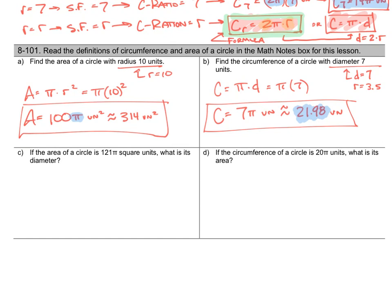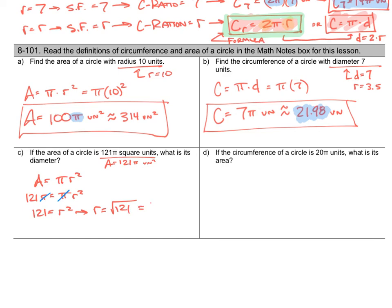Part C: the area of a circle is 121 pi square units — what is its diameter? Going back to the formula: area equals pi times radius squared. Substituting in, 121 pi equals pi times r squared. Dividing both sides by pi, those cancel, leaving 121 equals r squared. That means r is the square root of 121, which is 11. The diameter equals two times the radius — two times 11 — giving a diameter of 22 units.